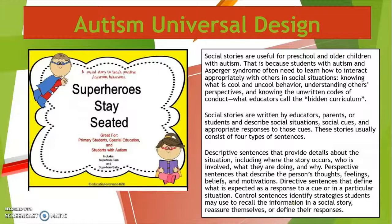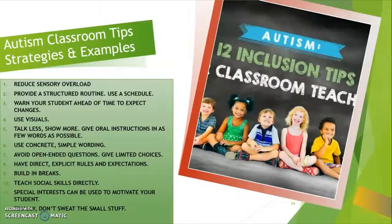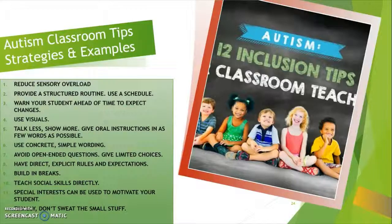This book, Superheroes Stay Seated, is a social story. Social stories are so helpful for preschoolers and older children with autism — check them out. Autism in the classroom: strategies to help these kids include reducing sensory overload, providing a structured routine and using a schedule, building in breaks, and finally, don't sweat the small stuff.